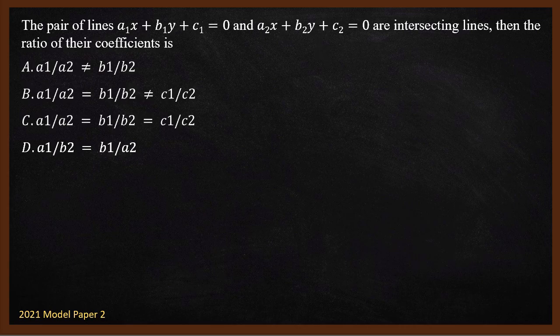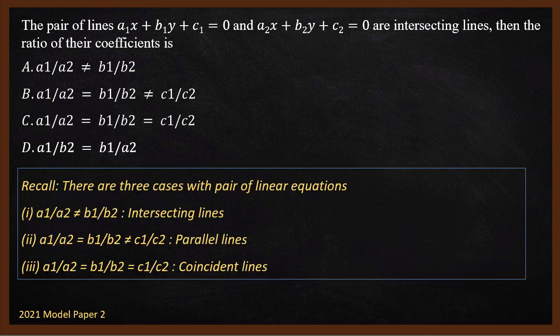If they are intersecting lines, we can represent these equations as lines on a graph. If these two lines intersect, they meet at one point. Then what is the ratio of their coefficients? This is a very common question. Intersecting, parallel, coincident, and this is what we need to remember.